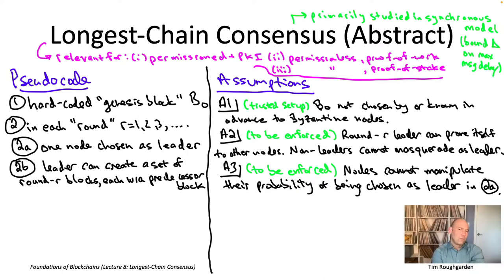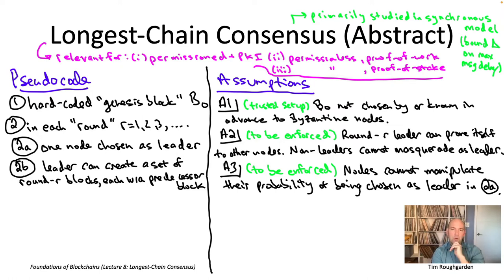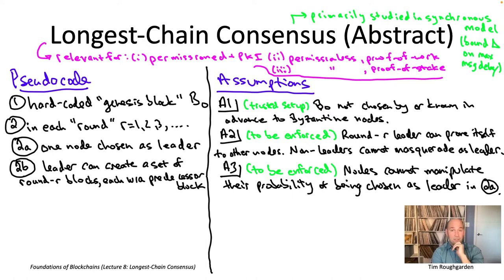This is a departure from BFT-type protocols like Tendermint discussed in lecture seven. In Tendermint, assuming less than a third of nodes are Byzantine, you're never going to have two different block-eights — a block needs a supermajority of votes to be finalized, so there's only going to be one block at each height.